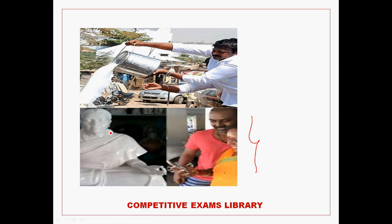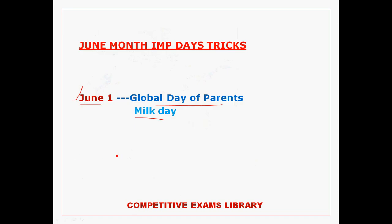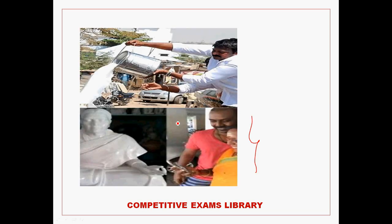So I enjoyed this picture and set it away. You can see this image — the graph is at the night table. So we go to parents. The first reference is to parents. So the Global Day of Parents and Milk Day — both are on June 1st.